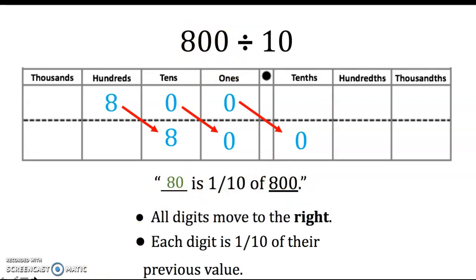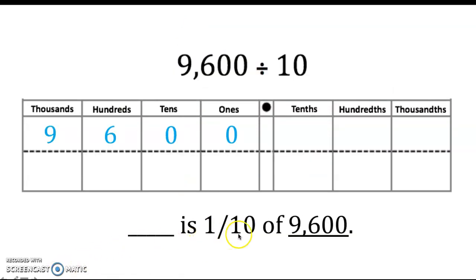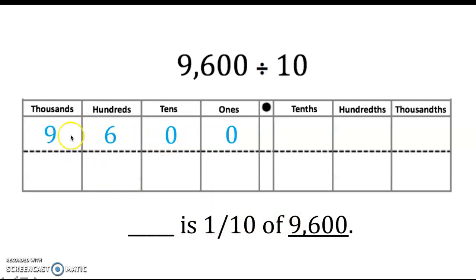Let's put this into context with another example. As I said, when you're determining one-tenth of, it's exactly the same as dividing by 10. So if you encounter 9,600 divided by 10, you write a blank space for your quotient and the sentence: blank is one-tenth of — the same as divided by 10 — 9,600, which is your dividend. After writing your descriptive sentence, plug the numbers into their respective place values: the 9 is in the thousands place, the 6 is in the hundreds place, the 0 is in the tens place, and the 0 is in the ones place.